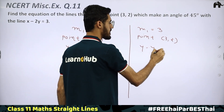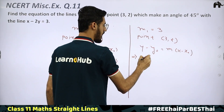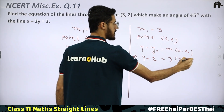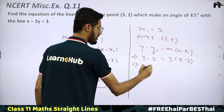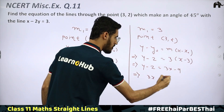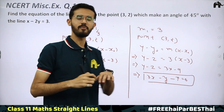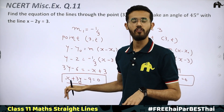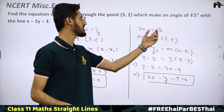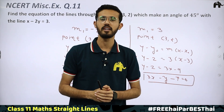Therefore, the two equations of the required lines are: x + 3y − 9 = 0 (when M = −1/3) and 3x − y − 7 = 0 (when M = 3). Both lines pass through (3, 2) and make a 45° angle with the line x − 2y = 3.